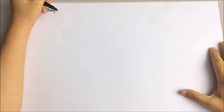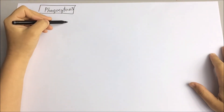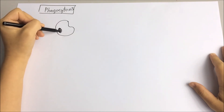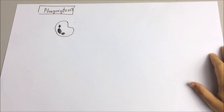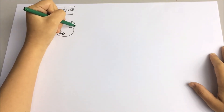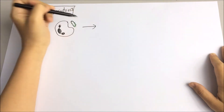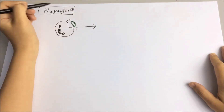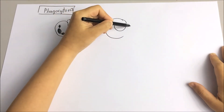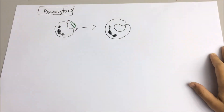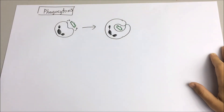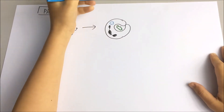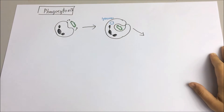Now we'll focus on the process of phagocytosis. Phagocytosis is basically a cell-eating process. When infection occurs, damaged cells release chemicals that attract phagocytes — mainly monocytes and neutrophils. The phagocytes extend their pseudopods towards the bacterium to engulf it. At the same time, the phagocytes produce hydrolytic enzymes packed in vesicles known as lysosomes.